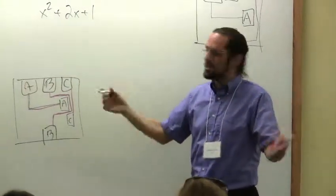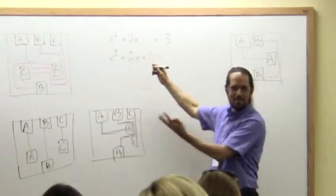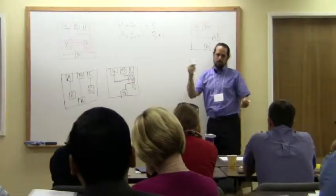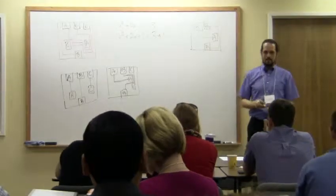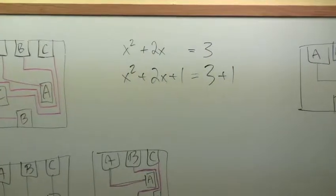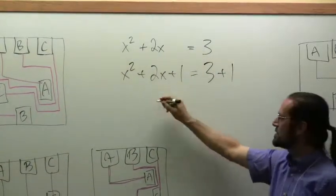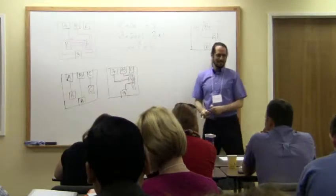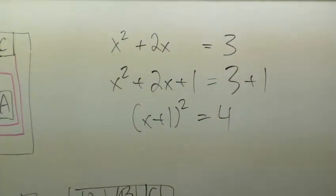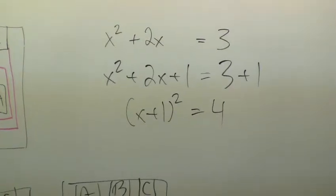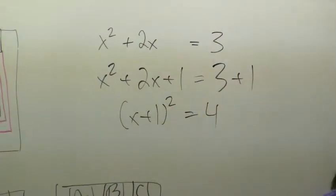But this is math, right? Your wishes come true. If you want a plus 1 there, you get it. You just have to either subtract 1 there or add 1 on the other side of the equation, whichever you like better. And now I have what I wished for — a perfect square. Now it's so much easier to solve this problem. In math, your wishes come true. Wishful thinking is a great strategy.